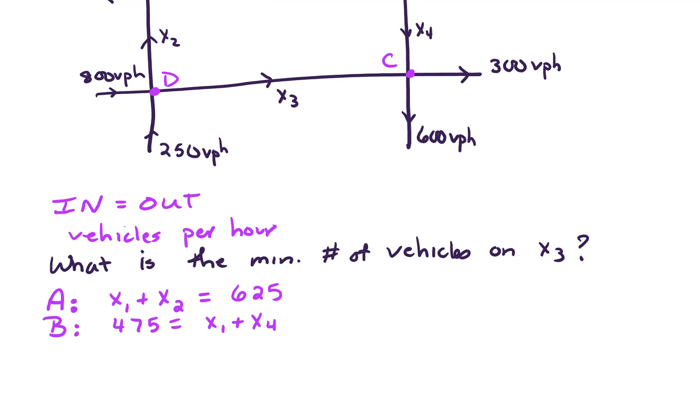For intersection C, again in equals out. So what's coming in here is X3 plus X4, and what goes out is 900. And lastly, for intersection D, what comes in, we've got 800 and 250, so that gives us 1,050. And what's going out is X2 plus X3.